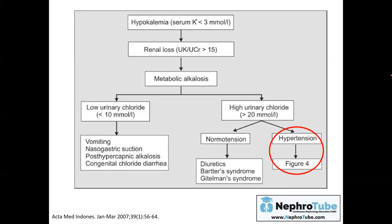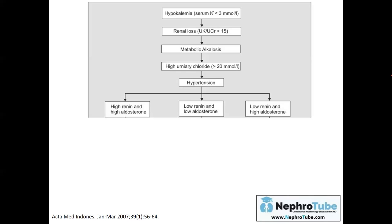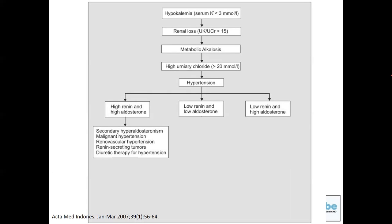If the patient has high urinary chloride and hypertension, measure serum renin and aldosterone. If both renin and aldosterone are high, the primary disorder is hyper-secretion of renin causing secondary hyperaldosteronism. This occurs in malignant hypertension, renovascular hypertension, and renin-secreting tumors. In this case, perform renal Doppler ultrasound and imaging of the abdomen and pelvis to exclude tumors or malignancies causing increased renin secretion.